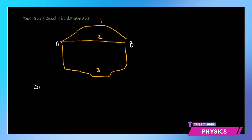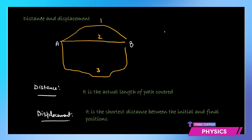Along all three routes, the distance is going to be different, but displacement is going to be the same. Distance is the actual length of the path covered — in all three cases the path is different, so the length differs. But displacement is the shortest distance between the initial and final positions, which is the straight-line distance from A to B, regardless of which route you follow.